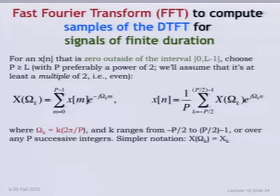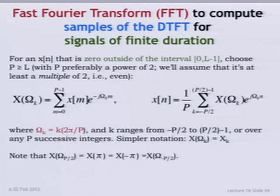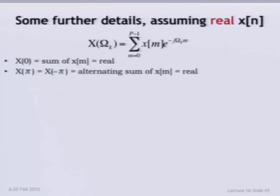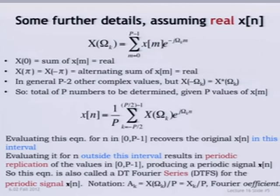What's really driving this is the fact that the signal is zero outside of a finite window. This notation often gets simplified: x of omega sub k gets simplified to just x sub k — it's the k-th spectral coefficient. We have a nice algorithm for computing things, which is the fast Fourier transform, which significantly reduces computation. The properties of these formulas are essentially the same as for the DTFT.